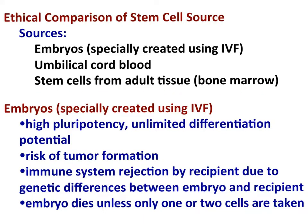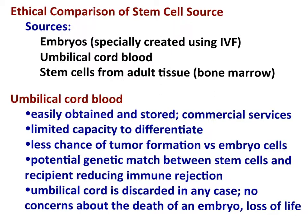Evaluating embryo stem cells: the one plus is high pluripotency — unlimited differentiation potential. Downsides include risk of tumor formation, potential immune system rejection by the recipient due to genetic differences, and the embryo is likely to die when cells are taken from it.